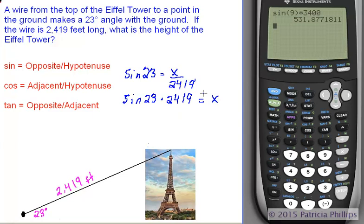Now that we have our equation and our variable is isolated, let's turn on our calculators. Make sure we are in degree mode and not radian, and then multiply the sine of 23 degrees by 2,419. Click the sine button, put the degree in, and close the parenthesis, and then multiply by 2,419. Press Enter.